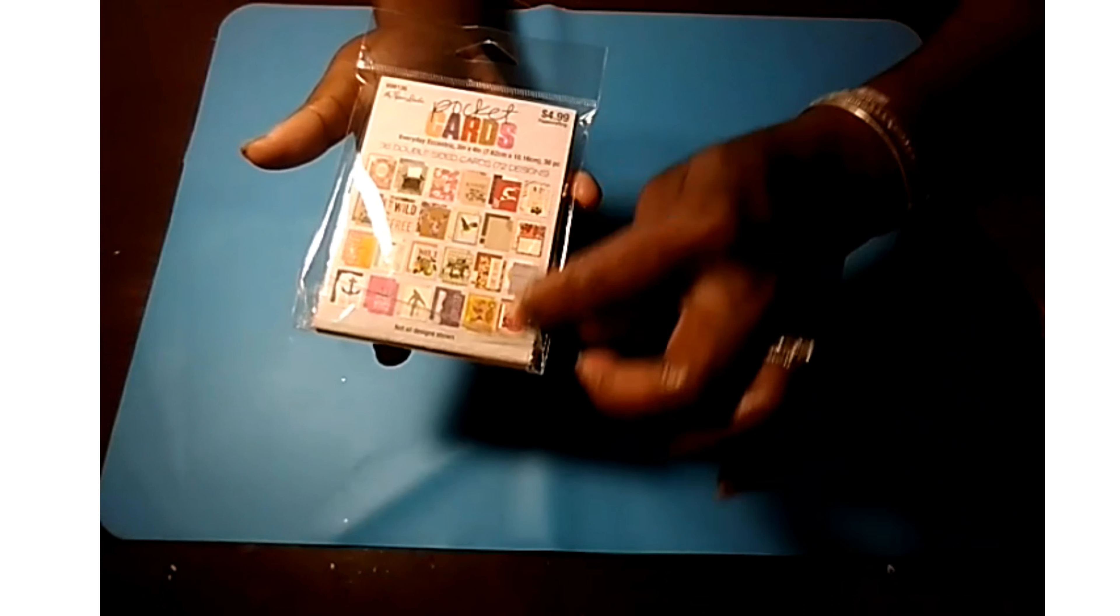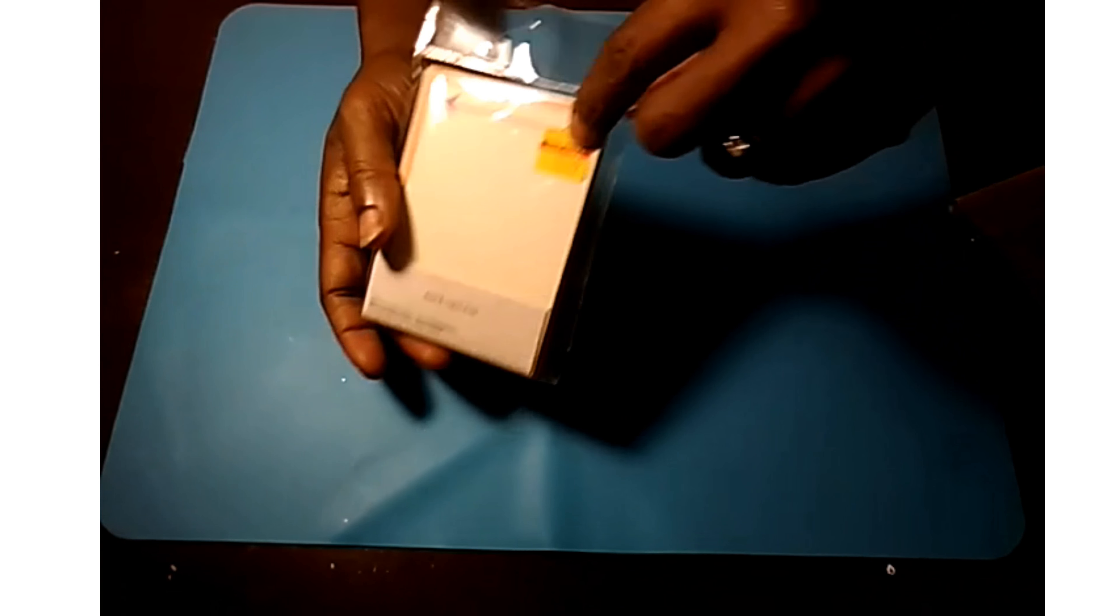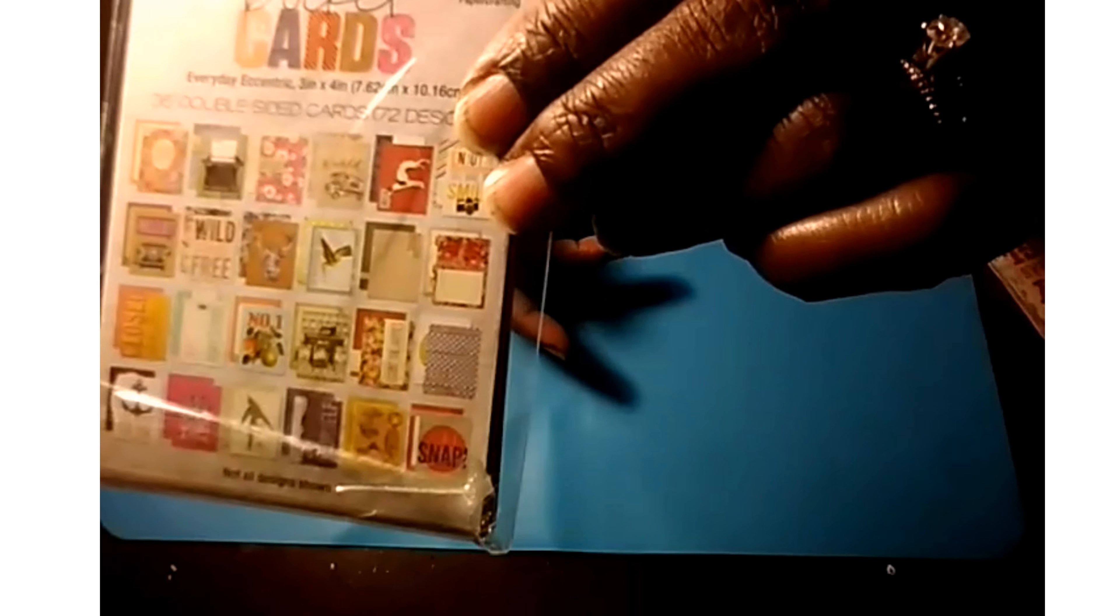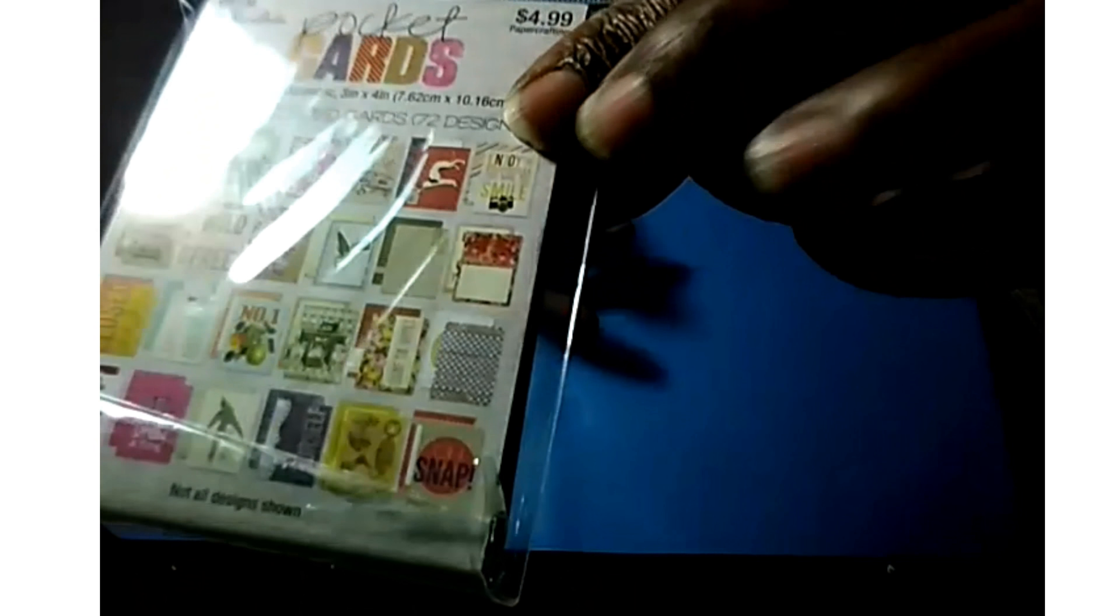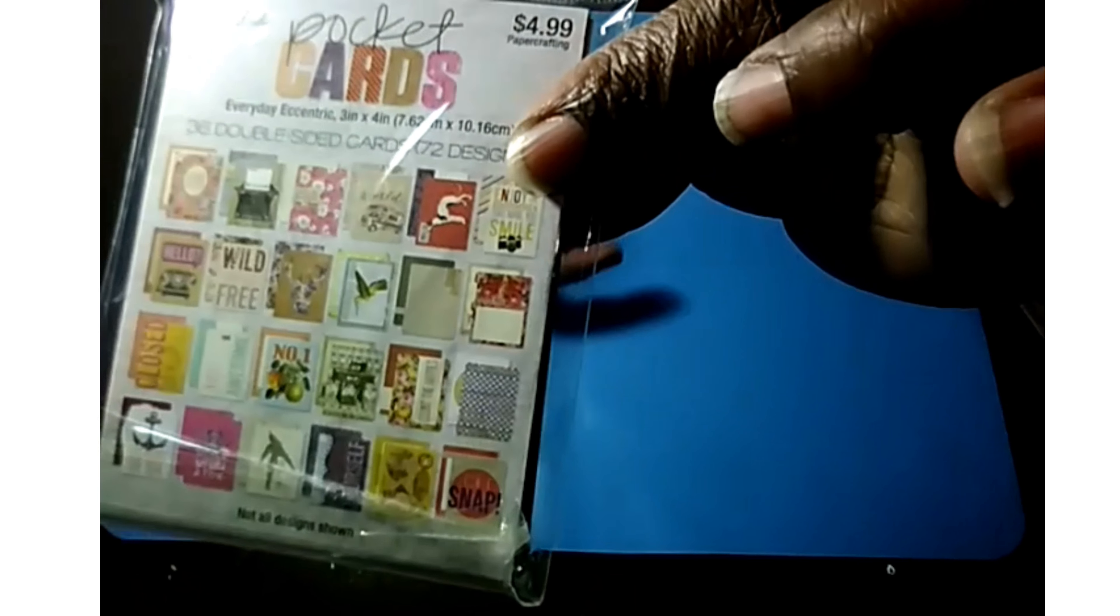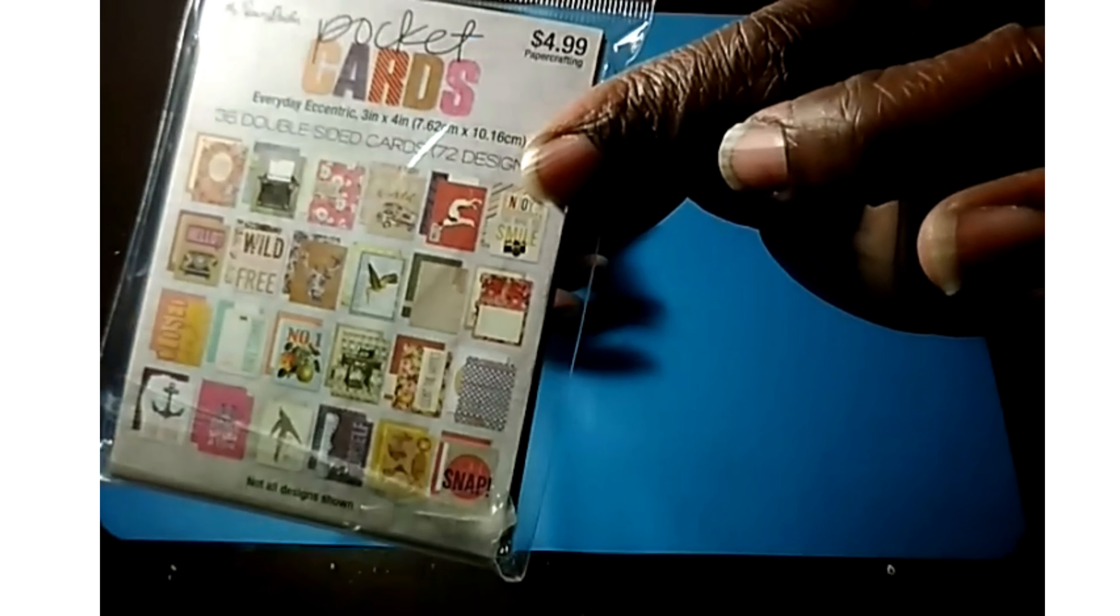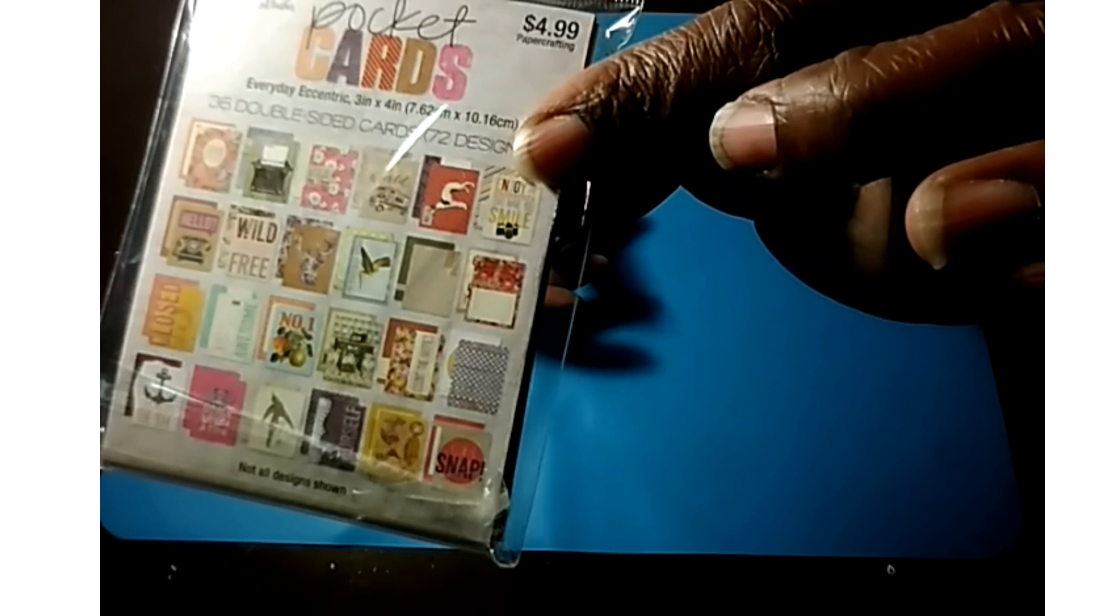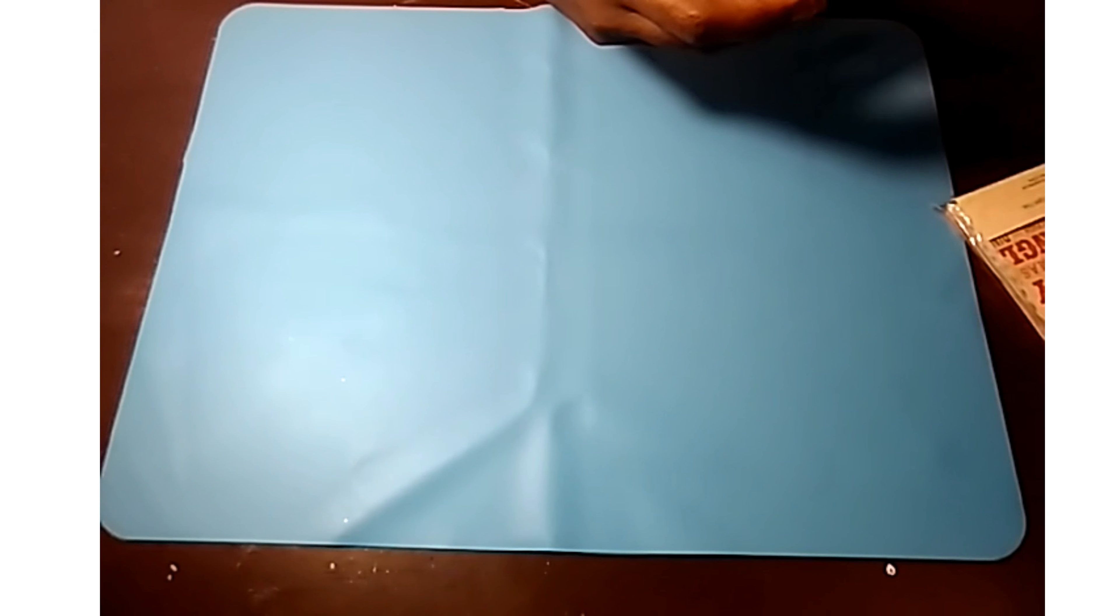Then I got these pocket cards. Now these were clearance at $2.49. And if you can see the images that are on there, each card is two-sided. And they can be used on your altered journals, slip inside some gifts, your planners, and if you use pocket cards, you know what these are for. But they're great, a great way to embellish your products.